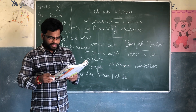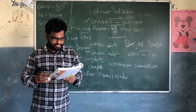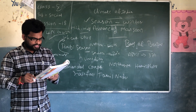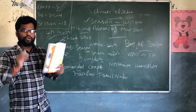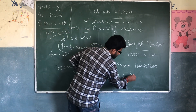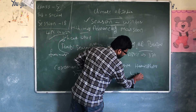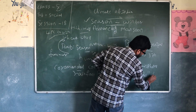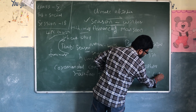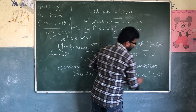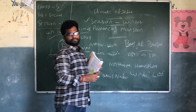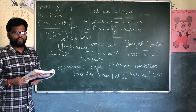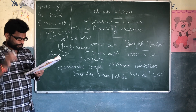The north of the plains experiences dry and hot winds called Loo — spelled L-O-O.